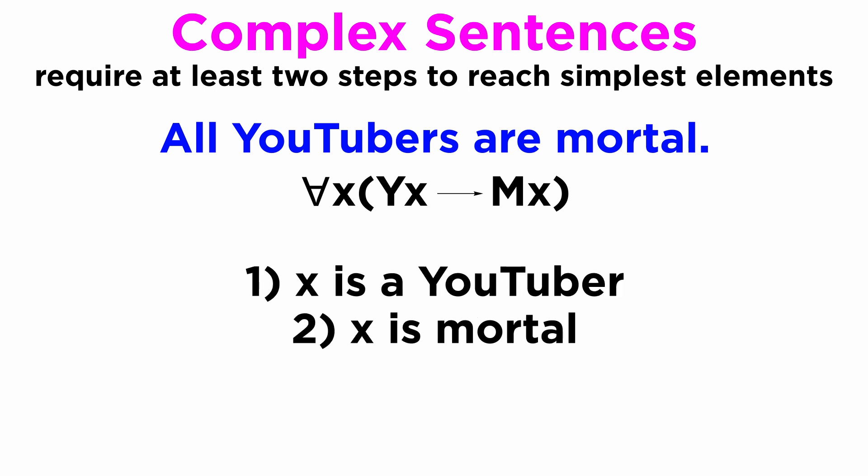As we analyze it, clearly there are two simple sentences that it is composed of, x is a YouTuber, Y(x), and x is mortal, M(x), connected by a material implication.